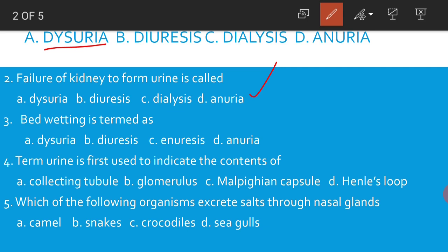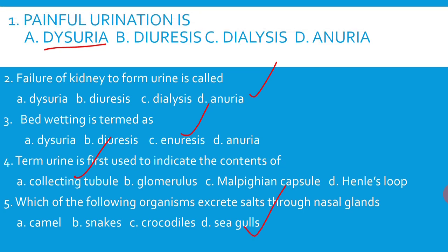Bed wetting is termed as enuresis. The term urine is first used to indicate the contents of the collecting tubule. Which of the following organisms excrete salts through nasal glands? Seagulls.